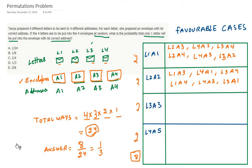Our favorable cases will be: L1 goes to A1, or L2 goes to A2 — note the word 'or' — so only one letter will be put in the envelope with its correct address. L1 can go to A1 and the other three will not go to their corresponding envelopes. Similarly, if L2 is put into A2, the other three letters will go to different addresses, and similarly for L3 and L4.